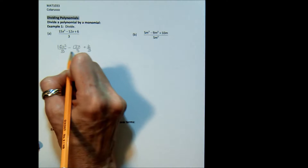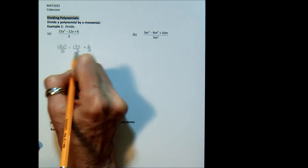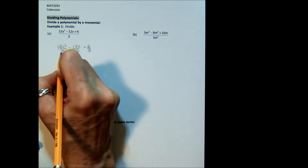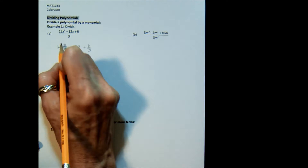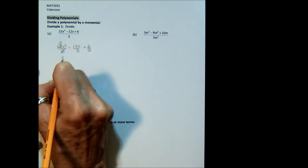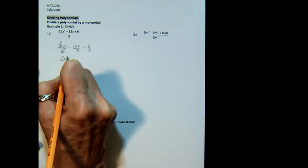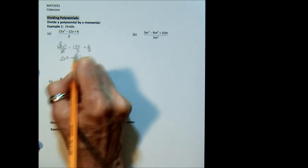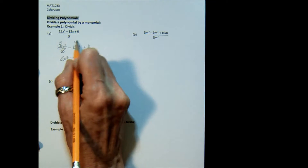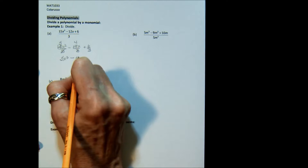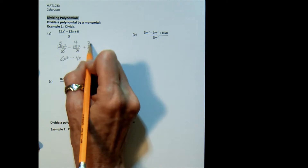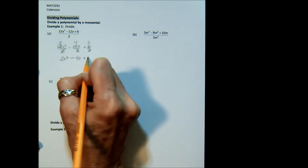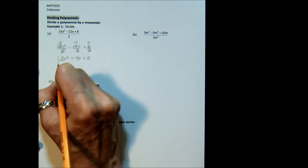We put each one over that same common denominator. So 3 goes into 15 five times, giving 5x². 3 goes into 12 four times, giving 4x. Plus 2.